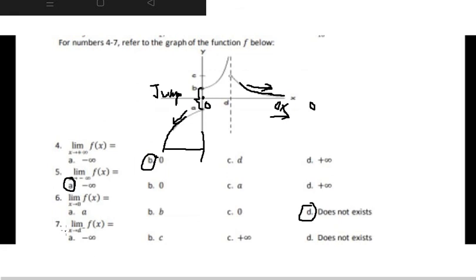Number 7: When x approaches d from the negative side, so it's from the negative side and they go to d here. When they go up to d, they go to positive infinity, so the answer is C.